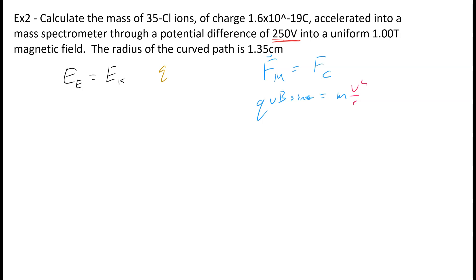We know we've got a charge of the electron, or sorry, the charge is going to be 1.6 times 10 to the negative 19 C.